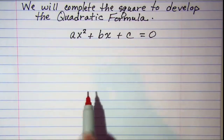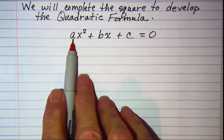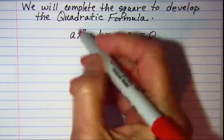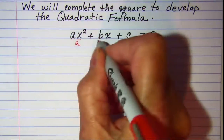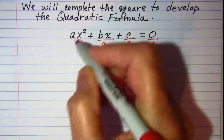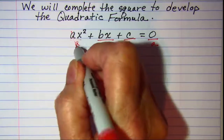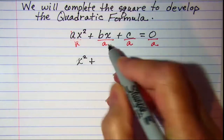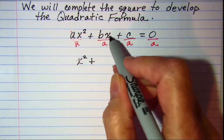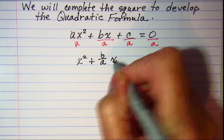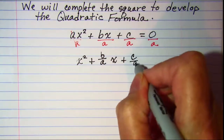The first step when completing the square is to make sure that the lead coefficient is one. So we need to divide both sides of the equation by a. We'll divide each term — a over a is one — and now we have x squared plus b over a times x.